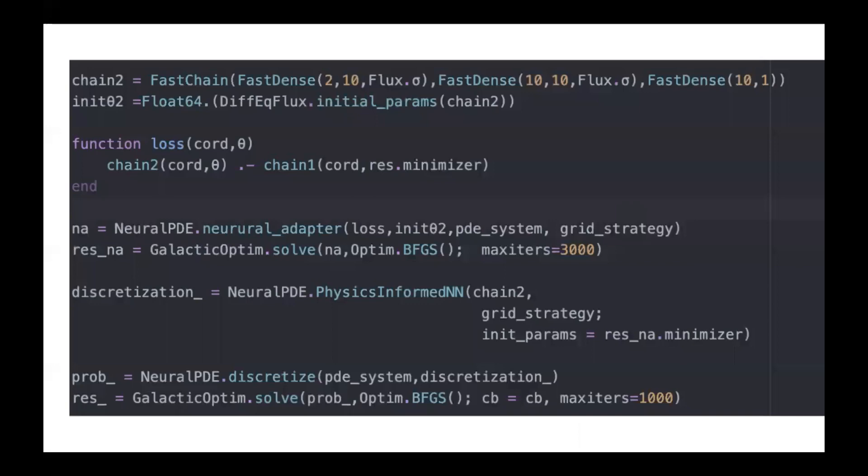A simple example here is creating a neural network with increased number of neurons in the layer. Here we create the neural network and the loss mechanism for retraining. We apply neural adapter and we're ready to create the next problem and continue the training.